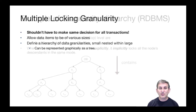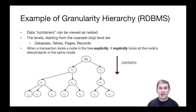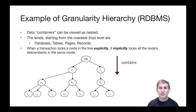You can represent this graphically as a tree. Imagine these data containers that are nested: at the top we have a database, inside the database we might have finer-grained things like tables, and inside the tables we might have some pages, and inside the pages we might have some records, and so on. When a transaction locks some node in this tree explicitly, it implicitly locks all the node's descendants in the same mode. So if you were to get a shared lock on T1, you would implicitly have a shared lock on all the objects below T1.